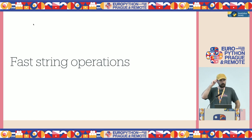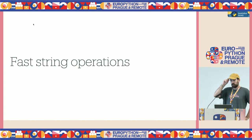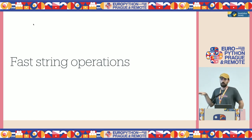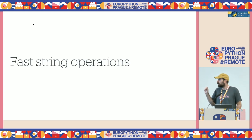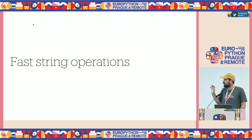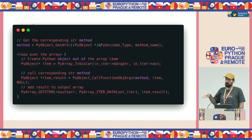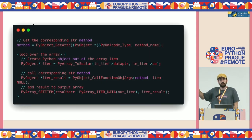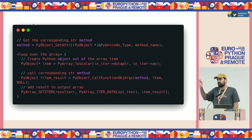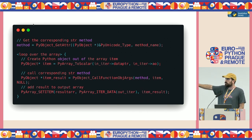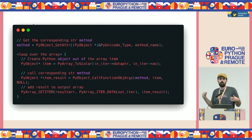One of the things that came out in 2.0 was fast string operations, and this is what we're going to be talking about today. It began as a project by looking at some C code — and it's very easy to understand what it does. Basically, it's how string operations used to work before NumPy 2.0.